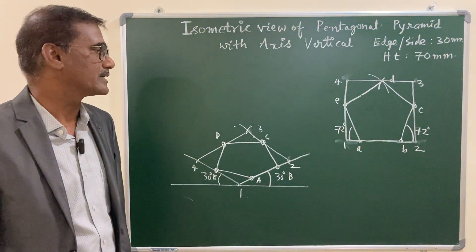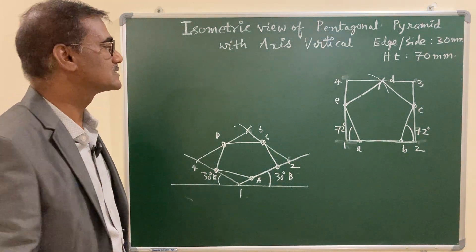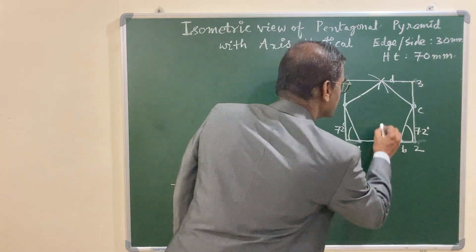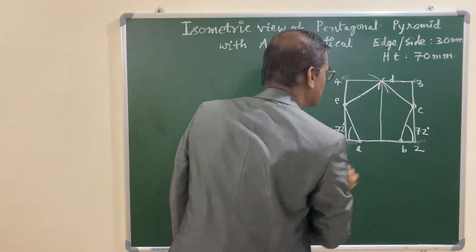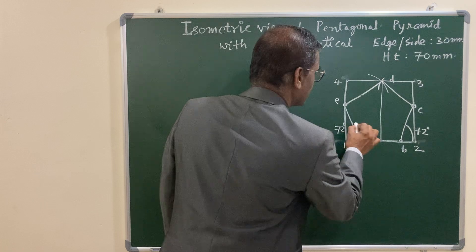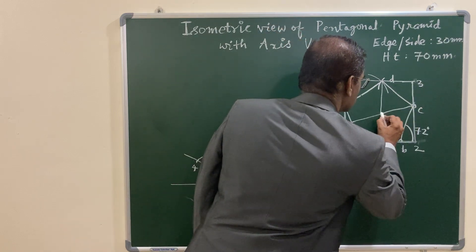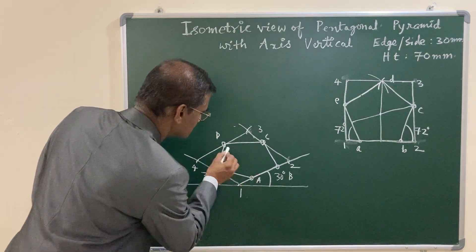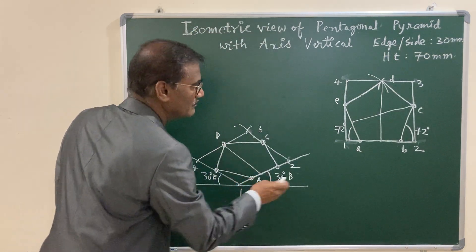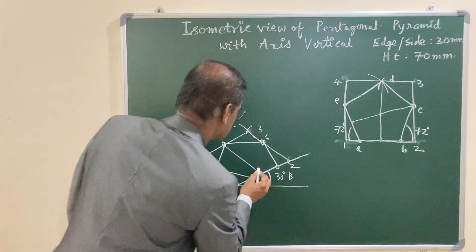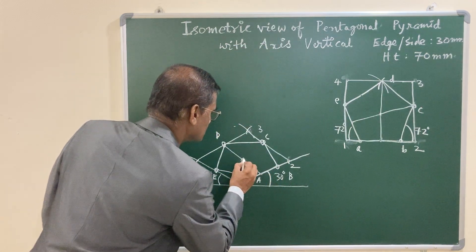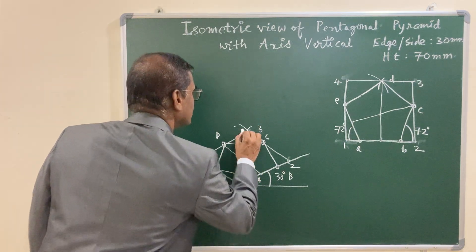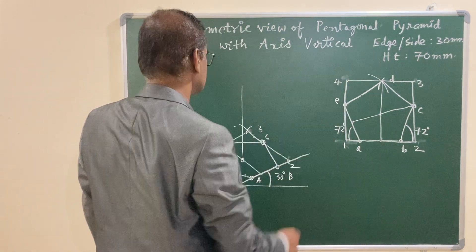After completing the base, locate the midpoint. From the midpoint of one edge, join with the opposite corner, and from the midpoint of the adjacent edge join with its opposite corner — the intersecting point gives you the center. Draw this line in isometric view and with the compass set up the distance so the midpoint is located. From this midpoint, erect a vertical line — the height is given as 70 mm — and this gives you the apex of the pyramid.